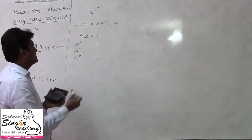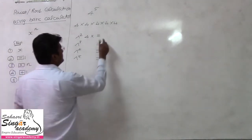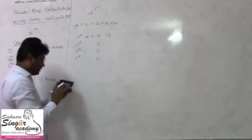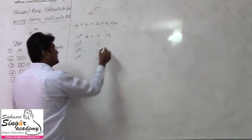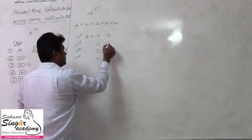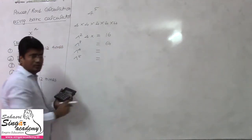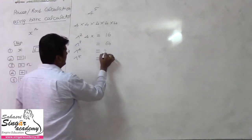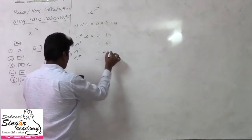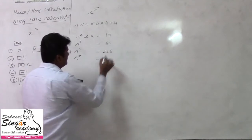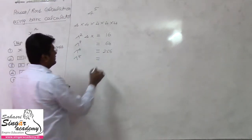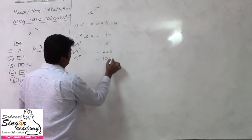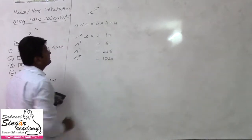Press equal repeatedly: you get 16, then press equal again and get 64, press equal again and get 256, press equal again and get 1024. That is the answer for 4 to the power 5.